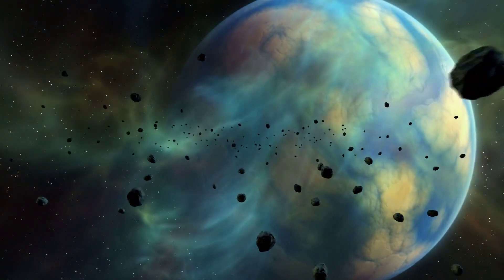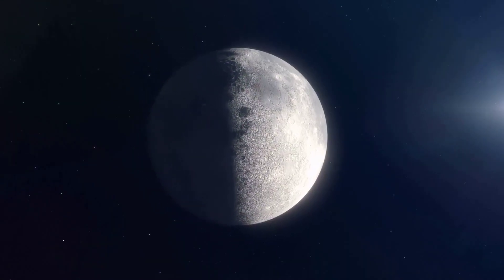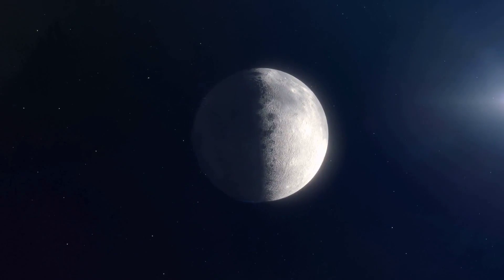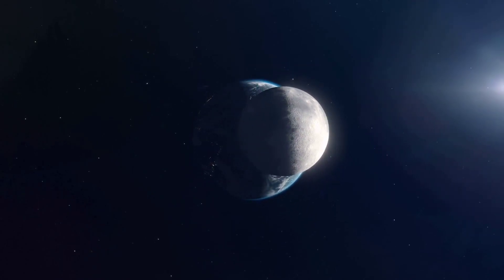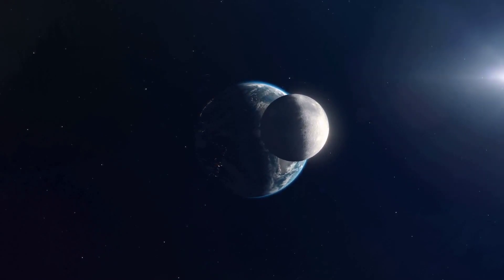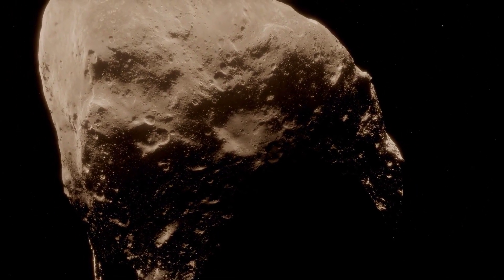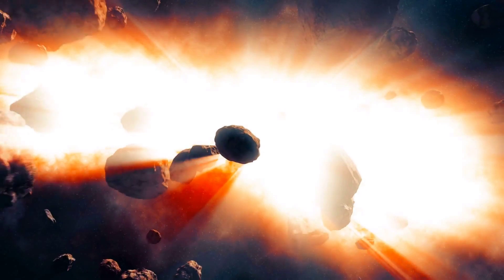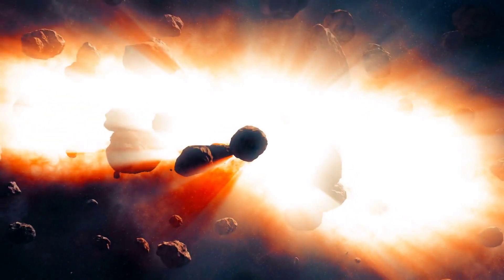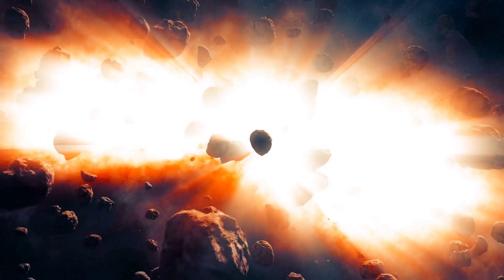As planets formed, these heavy elements were incorporated into their compositions. In the case of Earth, these elements became fundamental for the formation of the Earth's crust, oceans, and atmosphere. They also play a crucial role in the origin and maintenance of life on our planet. Gold, for example, is an element that arrived on Earth through meteorites and other celestial bodies that collided with the planet. These collisions occurred mainly during the period of intense bombardment that the solar system experienced in its first million years of existence.